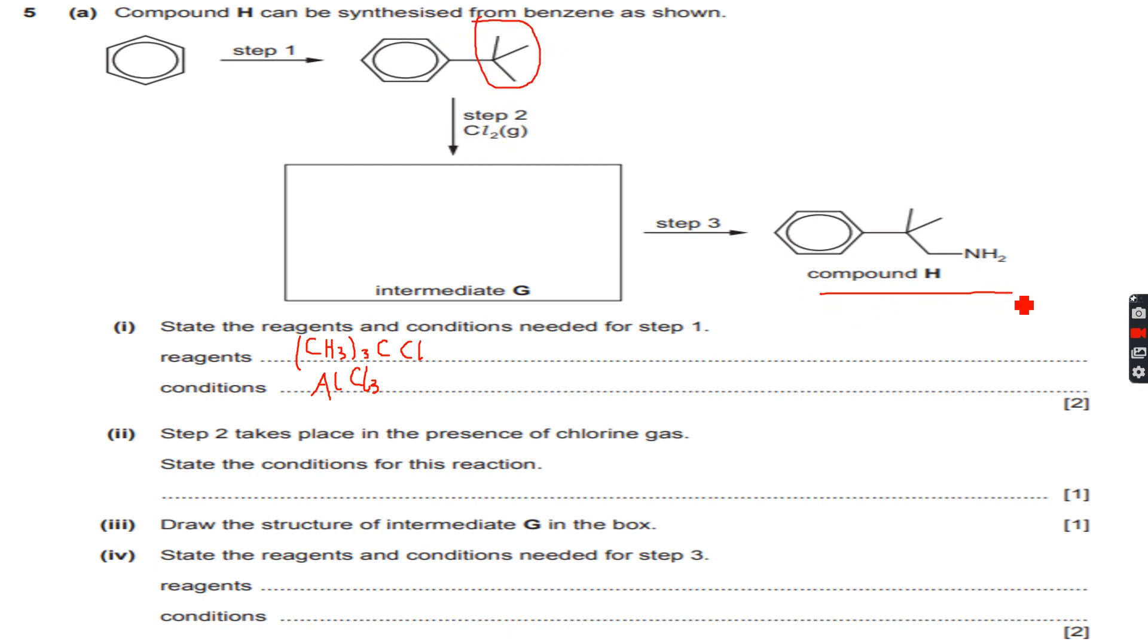If you see compound H, we have something substituted over here, but nothing on the benzene ring. And if we would have added chlorine on the benzene ring, it would have stayed where it is. This means that we are adding chlorine to the side chain instead of the benzene ring. So let's do that now.